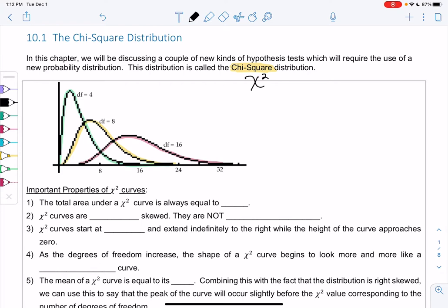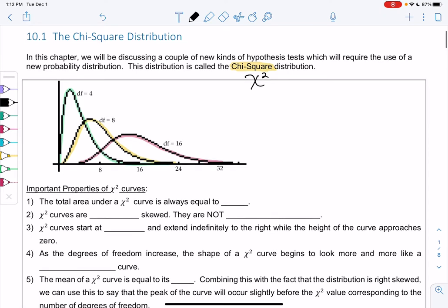So the total area under the χ² curve is always 1, and that again has to do with probabilities add up to 1.